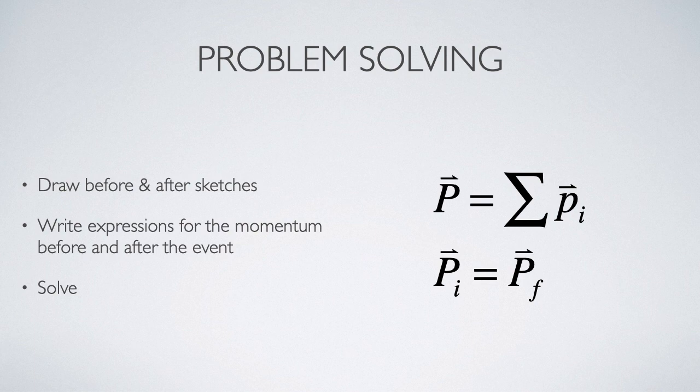So what we need to do is to write expressions for the total momentum of every particle in the system before the collision and for the total momentum vectors of all the particles after the collision. That's usually quite helpful to draw sketches to make that easier. And then if we're lucky and we have enough knowns, we'll be able to solve that equation for what we're looking for.